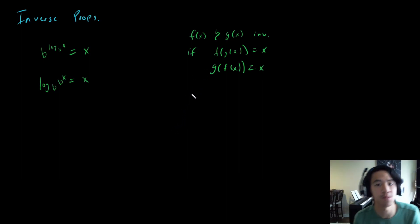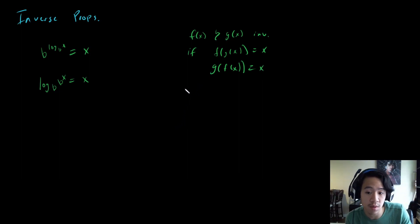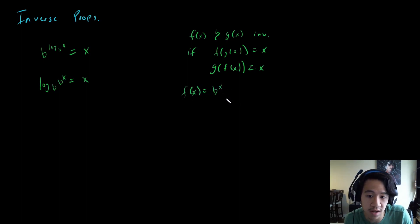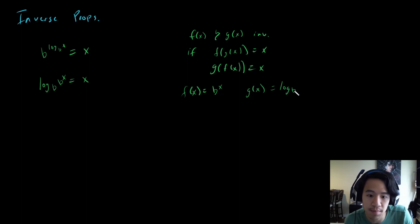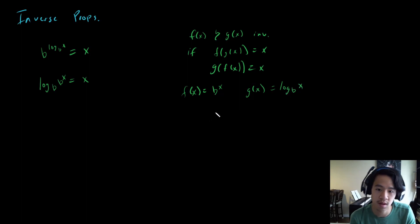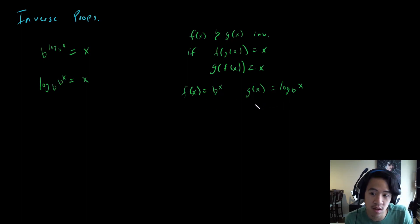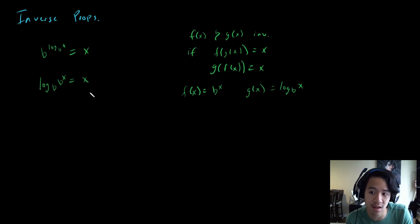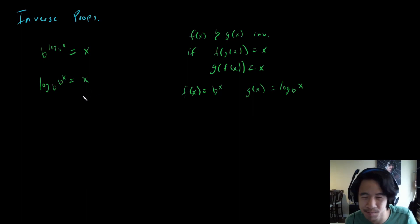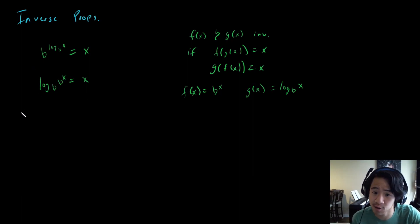This is exactly the property we're using. If f of x is b to the x — our exponential function — and g of x is log base B of x, then a composition of these two functions equals x, because they're defined as inverses. So those are our two inverse properties.